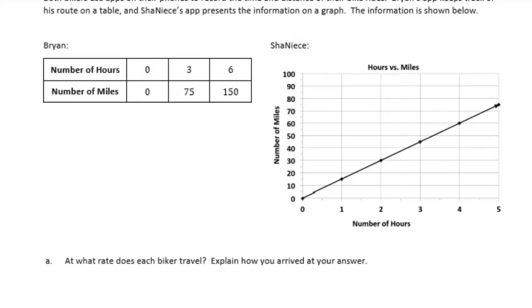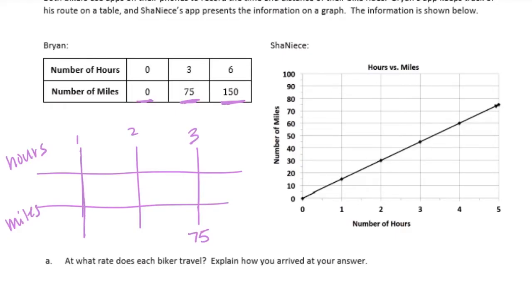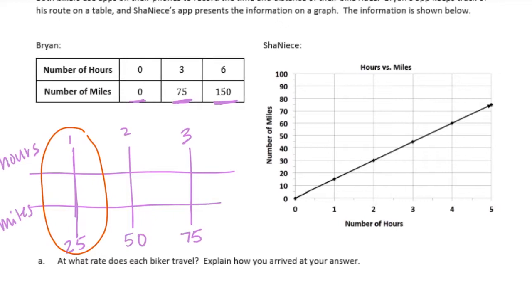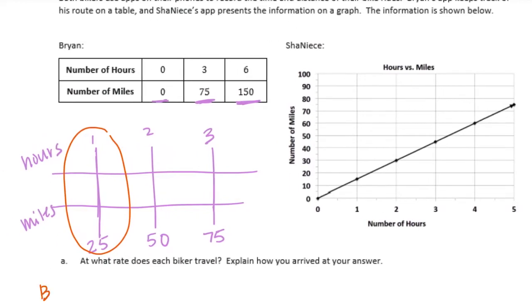Okay, so let's start with Brian. His information is in the table. So he has 0, 0 and then 3, 75 and 6, 150. So let's make a double line graph here. And what we want to know is in 1 hour, so hours, how many miles does he go? So in 1 hour, 2 hours, in 3 hours we know he goes 75 miles. So if I were to divide that by 3, 75 divided by 3, that would be 25 miles in 1 hour and 50 miles in 2 hours. So this is the information we really need to know. He goes 25 miles in 1 hour.